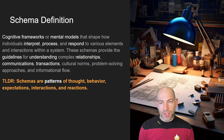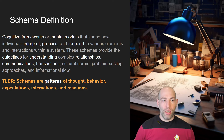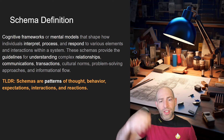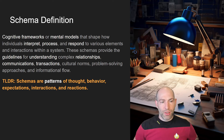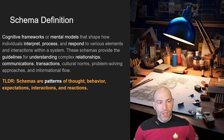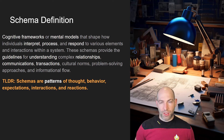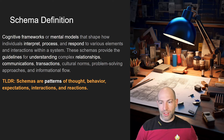What is the definition of a schema? For the sake of this video, schemas are cognitive frameworks or mental models that shape how individuals interpret, process, and respond to various elements and interactions within a system. These schemas provide the guidelines for understanding complex relationships, communications, transactions, cultural norms, problem-solving approaches, and informational flow. In other words, schemas are patterns of thought, behavior, expectations, interactions, and reactions — patterns and blueprints.